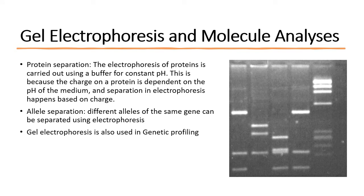When doing gel electrophoresis, the composition of the gel is very important. Polyacrylamide is used for the separation of proteins, whereas agarose gels are used for DNA. When separating proteins, you must maintain a constant pH using a buffer, because proteins are affected by changes in pH and you don't want fragments to separate incorrectly. If you're writing from next year under the new syllabus, you might get some unusual questions, so pay attention to every extra detail.